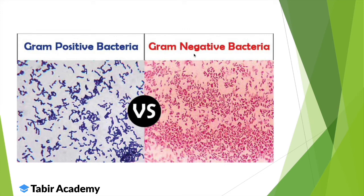When there is a surface with bacteria on it, we put it on a microscope and get an image. We can see gram-positive appearing purple, gram-negative appearing pink, or a mix of both if there are two types of bacteria on the surface.